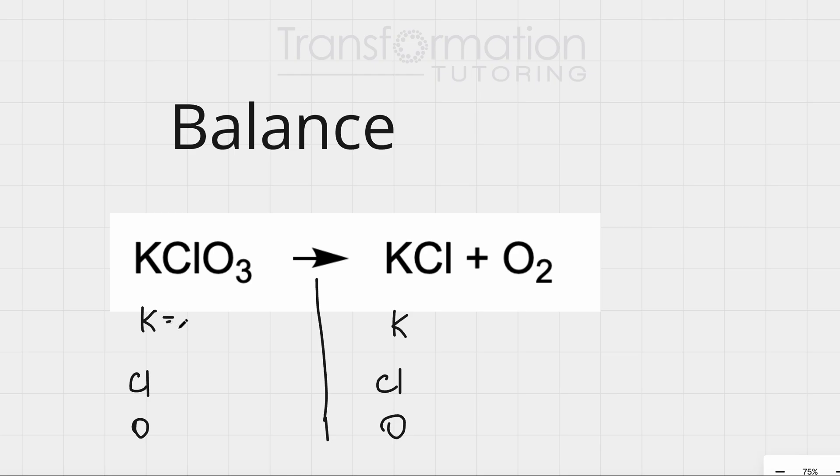Next, what I'm going to do is I'm going to write how many atoms of each element I have right now. So if there is no number next to your element, that means there is a 1. So K is 1, Cl is 1 and oxygen here is 3. K is 1, Cl is 1 and oxygen here is 2.